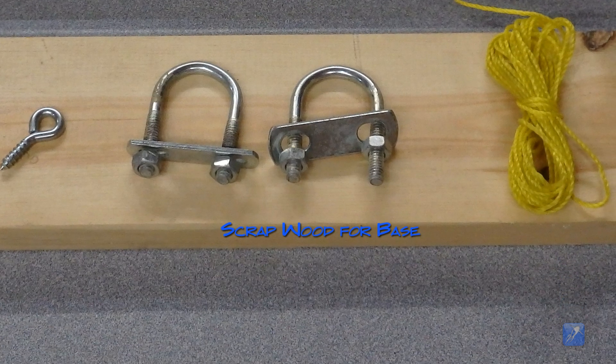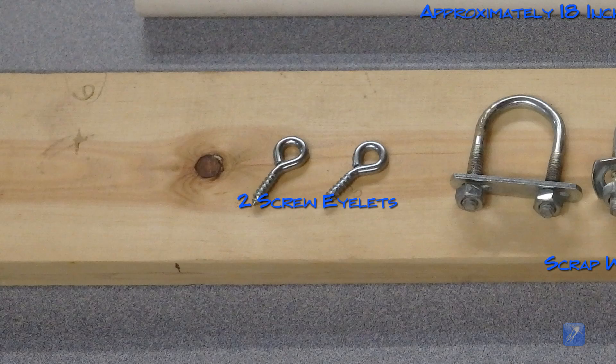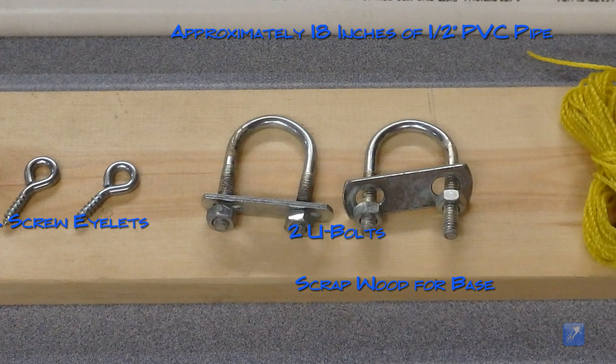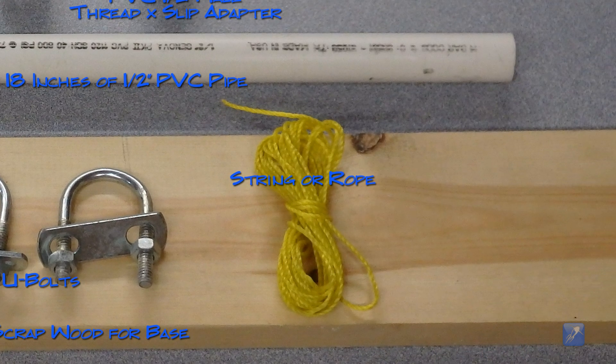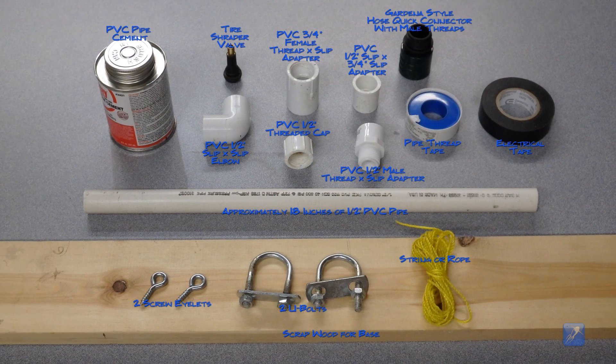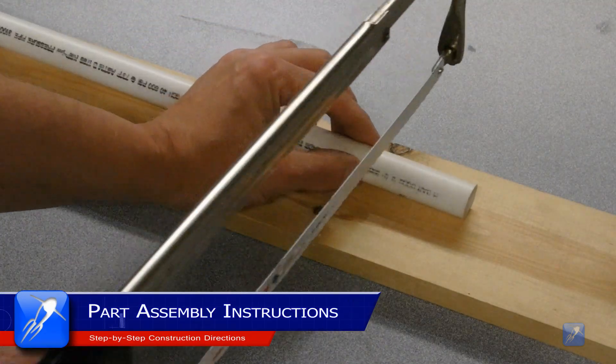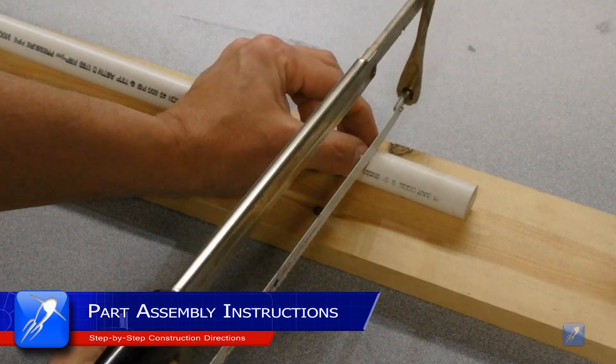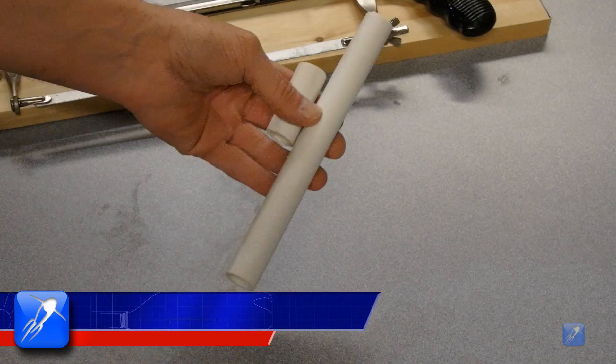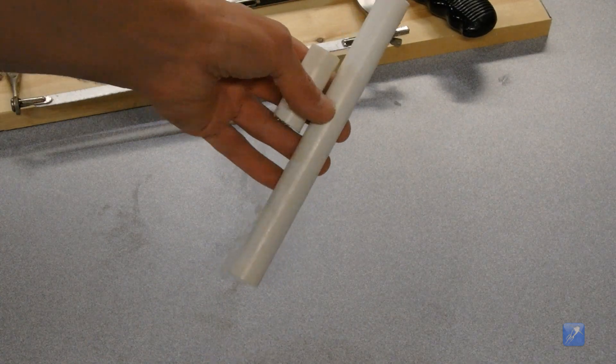Some scrap wood, two screw eyelets, a pair of U-bolts, and some string or thin rope. One piece should be about 10 to 12 inches long and the other one should be about 2 to 3 inches long. The dimensions are not really that important.